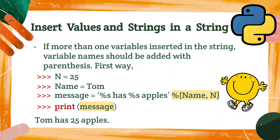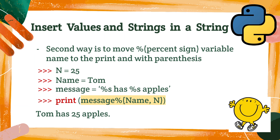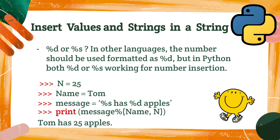Second way: you move %n to the end of the message string — please see the highlighted %n. When you print, you just print message instead of message %n. Capital N is the variable name. If more than one variable is inserted into the string, your variable name should be added with parentheses. First way: put % and then parentheses inside the string — please see the highlighted part. The second way is to move the % variable name to the print statement with parentheses — please see the highlighted part.